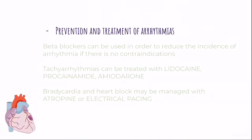For prevention and treatment of arrhythmias, beta blockers can be used to reduce incidence of arrhythmias if there is no contraindication. If tachyarrhythmias occur, they can be treated with lidocaine, procainamide, or amiodarone. Bradycardia or heart block may be managed with atropine or electrical pacing — an artificial pacemaker placed in the heart.